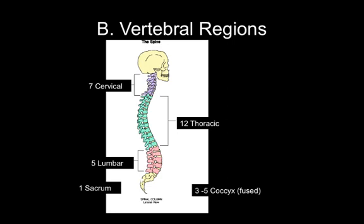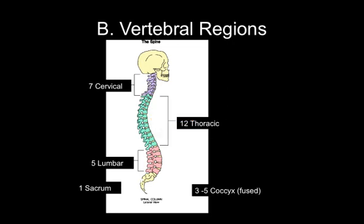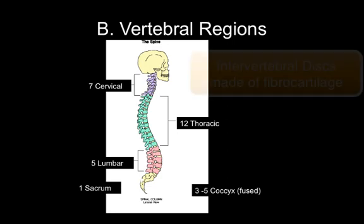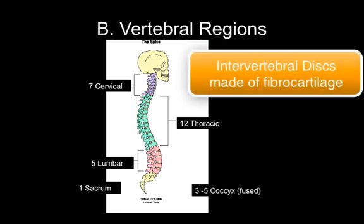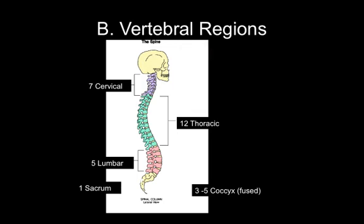The main job of the vertebral column is to protect the spinal cord and support the main axis of the body. You'll notice some natural curves as you look at the vertebral column in its lateral view. We describe these curves from an anterior view — that is, if you're looking at the skeleton face on. The thoracic region has a convex curve anteriorly, while the lumbar is convex and the sacrum is concave. All of these add up to a central spring of the body which acts as a central shock absorber as you move. In between each individual vertebra is an intervertebral disc made up of fibrocartilage, which also adds shock absorbency to the spinal cord.